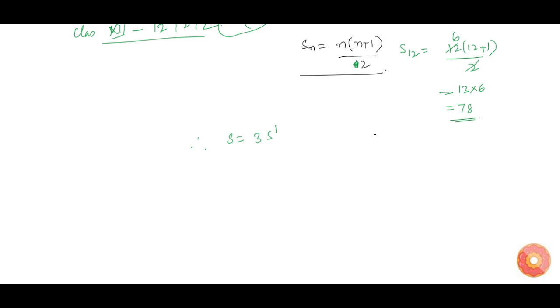Therefore, S equals 3 into S dash, which means 3 into 78, which is 234. Therefore, the number of plants that will be planted by the school is 234. This is our answer.